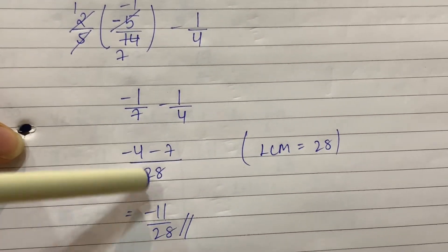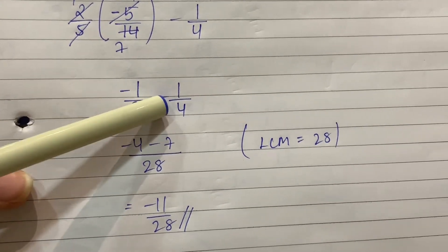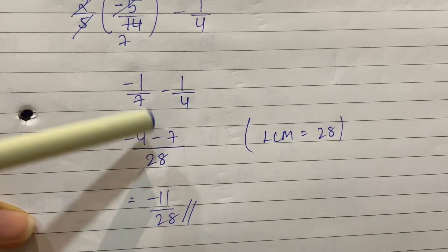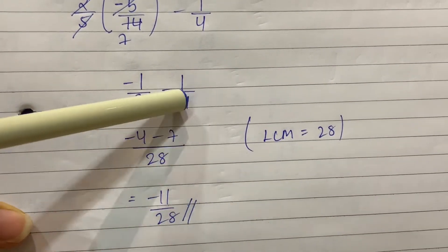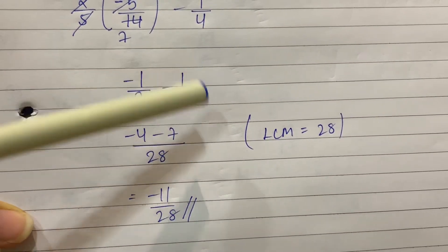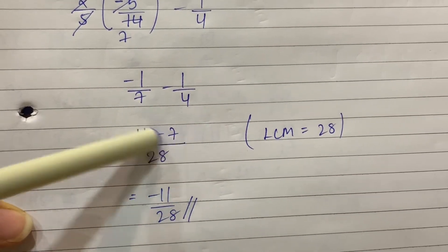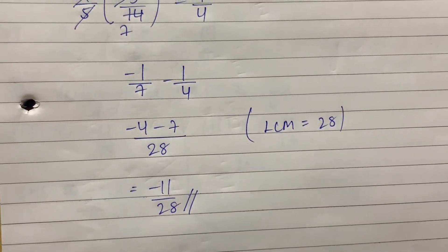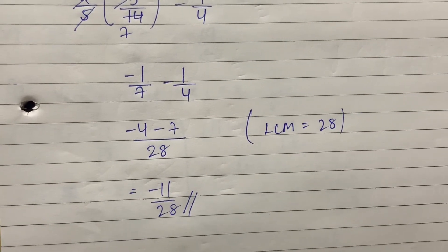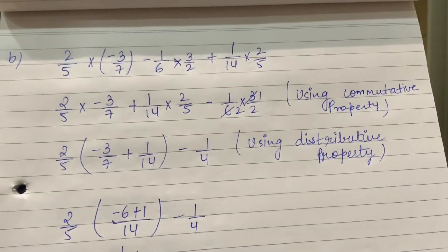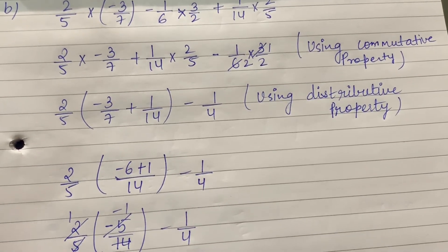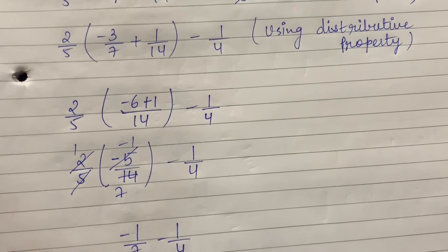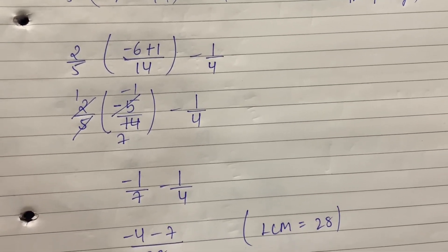Now LCM of these two is 28, because 7 and 4 are different numbers and don't appear in each other's table. Seven fours are 28, minus 1 into 4 is minus 4. Four sevens are 28, so 1 into 7 is 7. Minus 4 minus 7 is minus 11 upon 28. So the final result is minus 11 upon 28. Same approach: commutative property used to arrange, then common taken with distributive property, and ultimately sum solved. Final result: minus 11 upon 28.